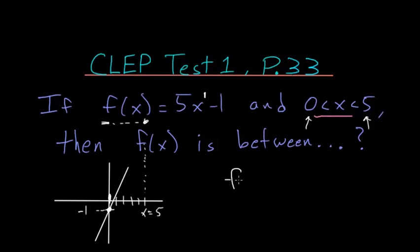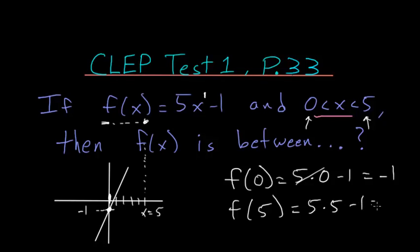So f of 0 is 5 times 0 minus 1, and this is 0, so f of 0 is minus 1, and f of 5 is 5 times 5 minus 1, or 25 minus 1, which is just 24.